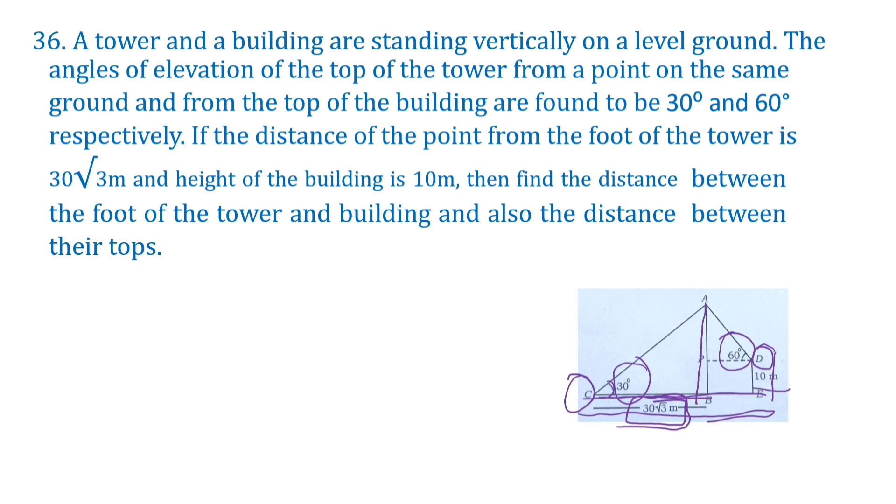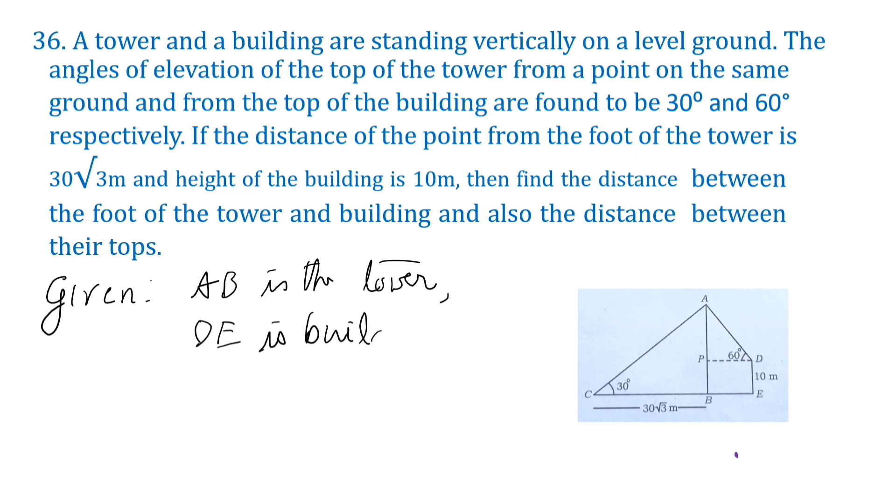Height of the building is 10 meters. DE is 10 meters. Then find the distance between the foot of the tower. We have to find BE. AB is the tower. DE is the building. Its height is 10 meters. C is a point on ground. CB is equal to 30 root 3. Distance between the point and the tower is 30 root 3 meters.